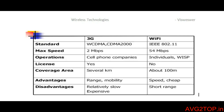IEEE gives 802.11 as the standard for Wi-Fi. Similarly, the standard for 3G networks is WCDMA, commonly provided by cell phone companies to access the internet. 3G gives a maximum speed of only 2 Mbps, whereas Wi-Fi provides up to 54 Mbps.